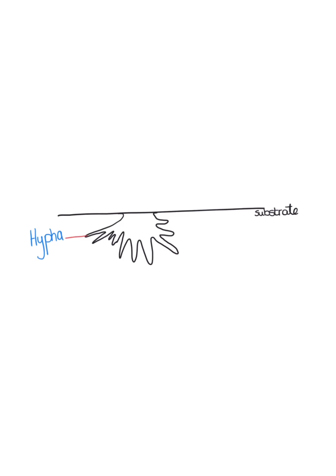Rhizopus is composed of many structures. It consists of thread-like structures called hyphae. Hyphae contain many haploid nuclei and are made of chitin. A group of hyphae is known as mycelium. Mycelium is what you actually see when you see mould growing on fruit or bread.